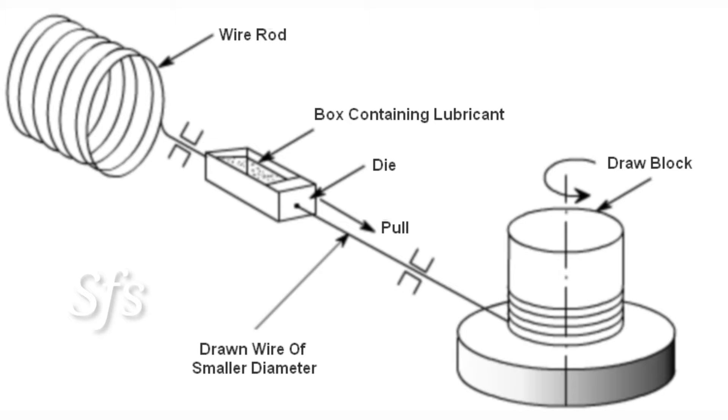So we use the die in the middle. We pull the wire of larger diameter through the die, and for pulling, a draw block is used. This draw block is rotated and powered by a motor. When the draw block rotates, the wire gets pulled out from the die. In the die, lubricant is filled in a lubricating box.